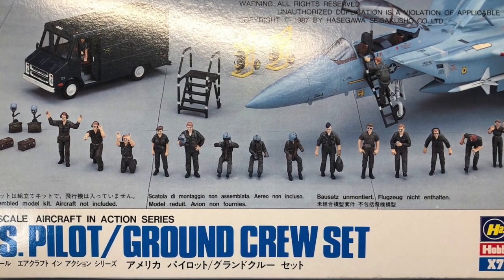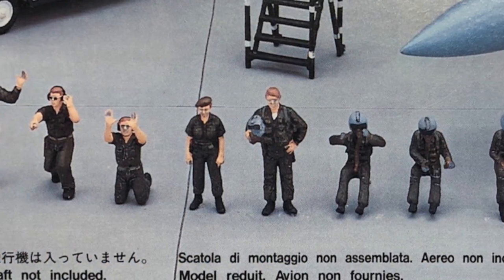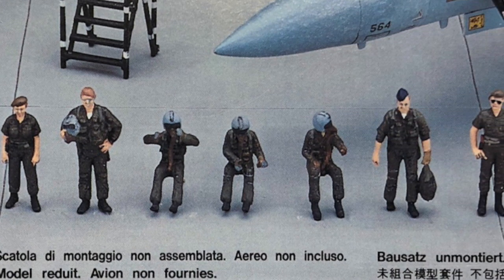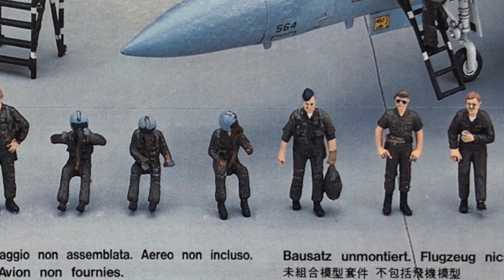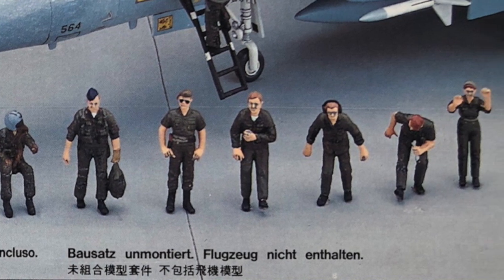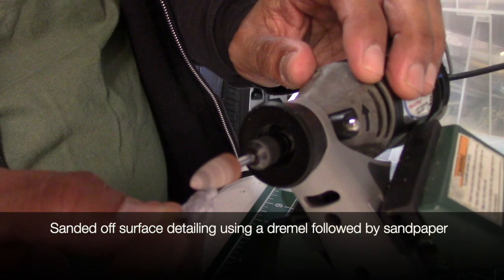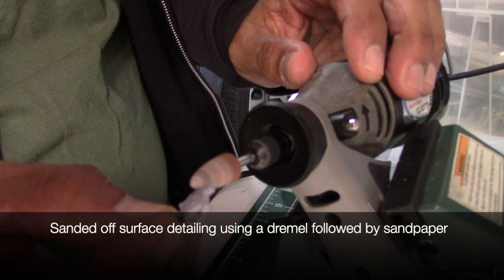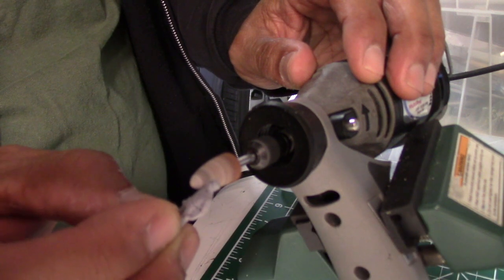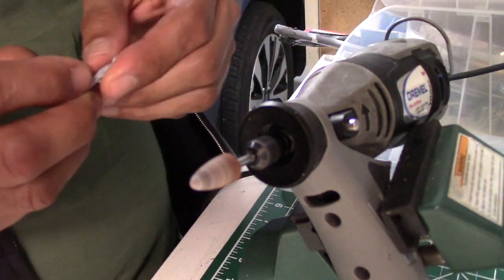So the figures I'm using for this project now come from this Hasegawa 1/72 scale U.S. pilot ground crew set. And as such, these figures will be molded with the clothing appropriate for these types of figures. And you can see they all have these outer pockets because they're fatigues. Some of them will have pilot gear as well. So because of this, this type of detailing has to be sanded off to match the type of uniforms that we're going to be needing for our crew here. And so I started with my Dremel and finished off with some sandpaper.